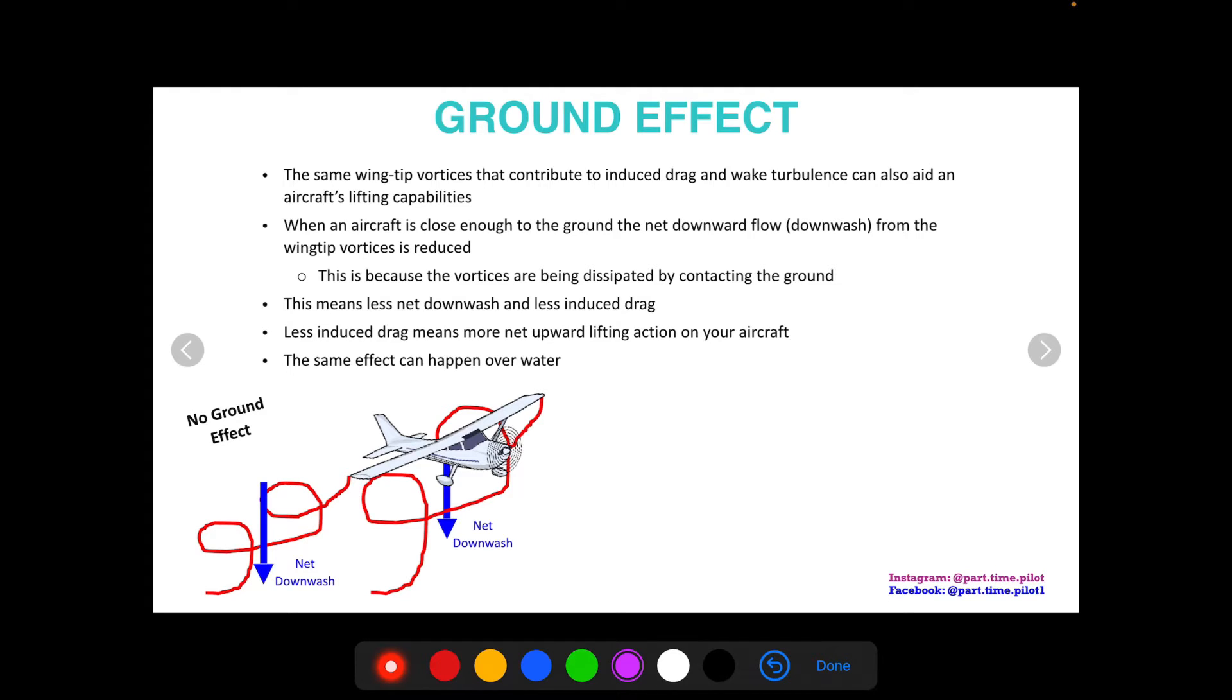Here we have no ground effect. We have these vortices that are coming off the wing tips and the net downwash is the force here with the blue arrows. So as you can see, we have a net downwash here with no ground effect. But when we're close to the ground, these blue arrows are smaller. The net force is smaller because as you can see, these vortices hit the ground and they can't continue to propagate downwards. They kind of just disperse and that has less of a net force downward on the aircraft, so less induced drag pulling down on the aircraft.